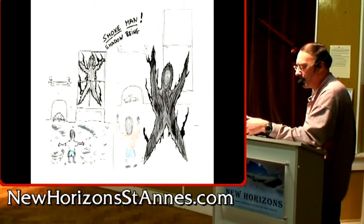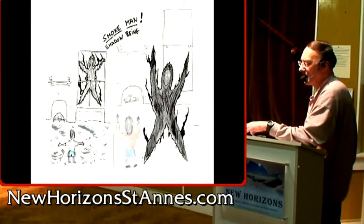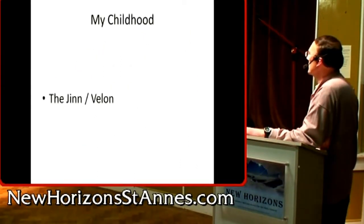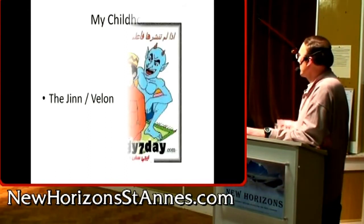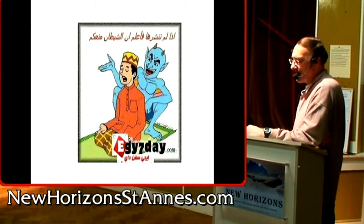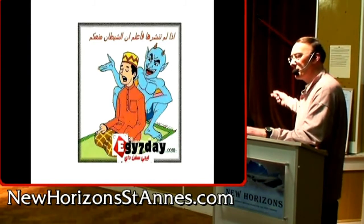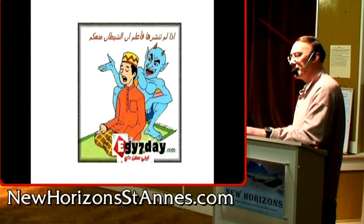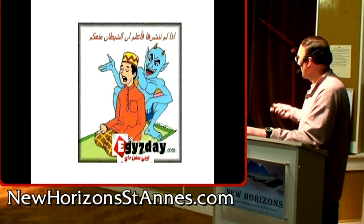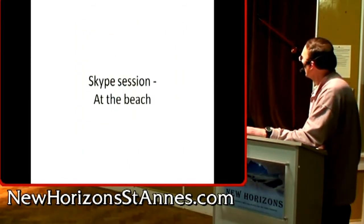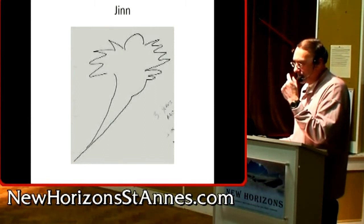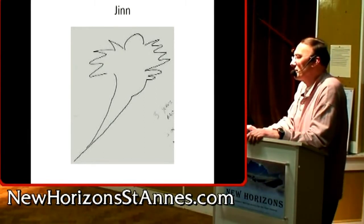Many people have very difficult times with shadow beings — they can torment and really hurt people. The jinn and the Valon: here's a representation from the East of a religious man on his prayer mat, and that is their representation of a jinn trying to tempt the religious man.